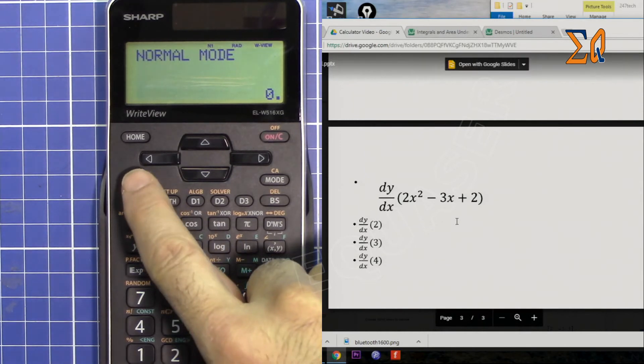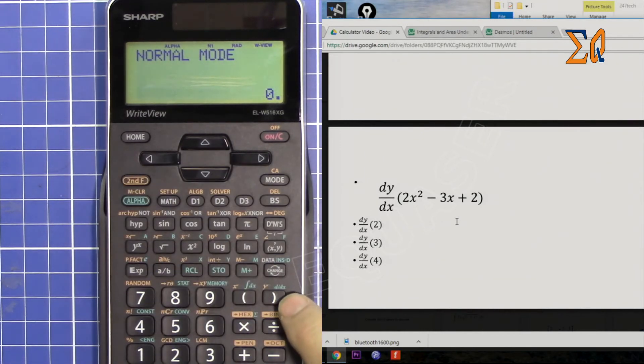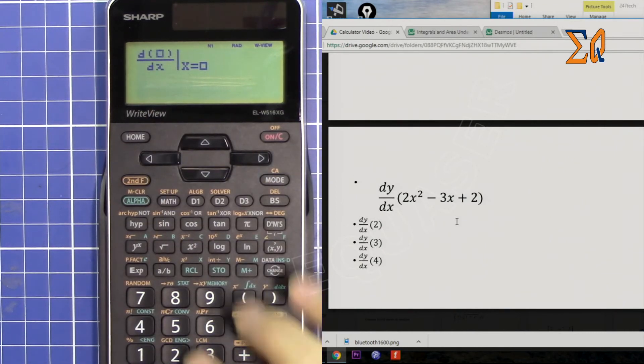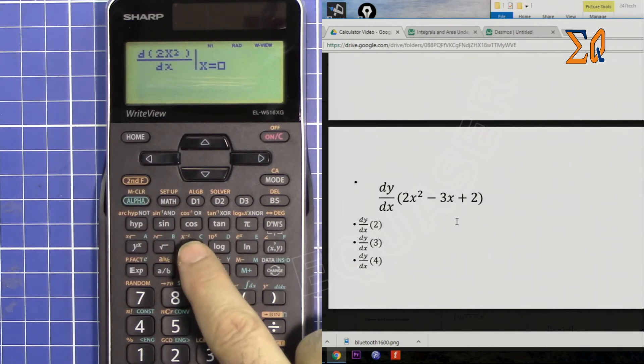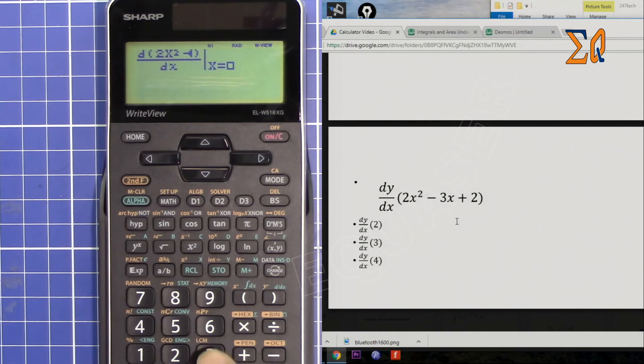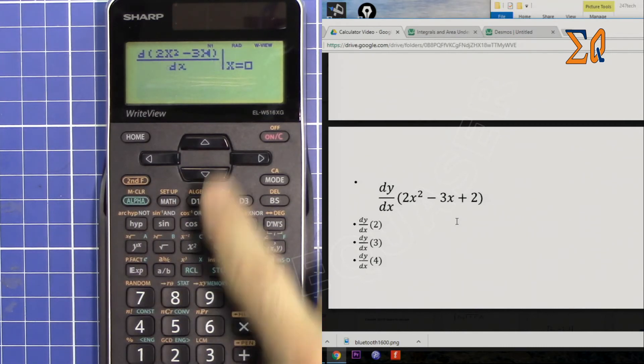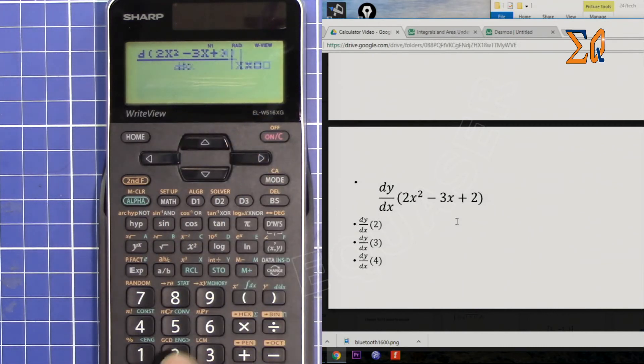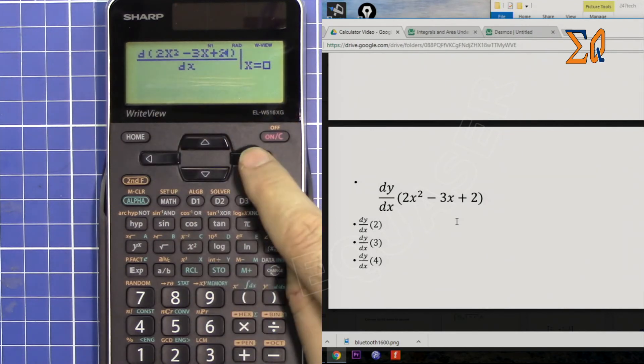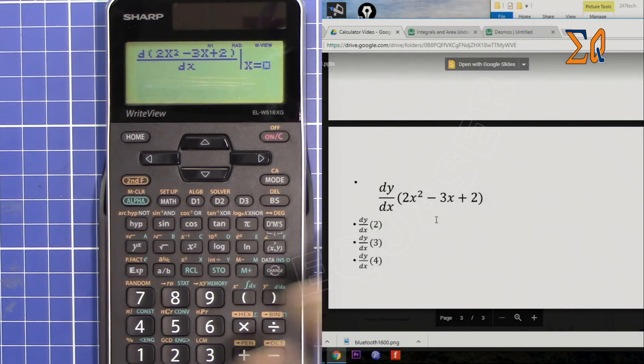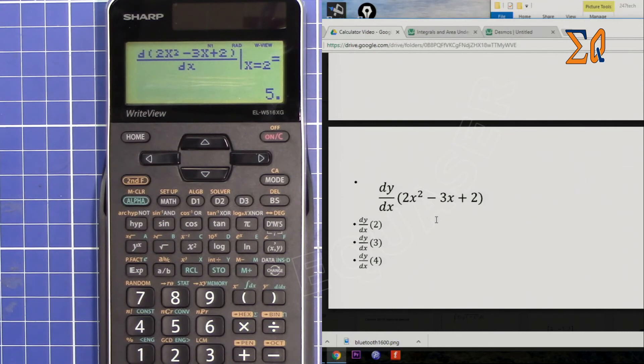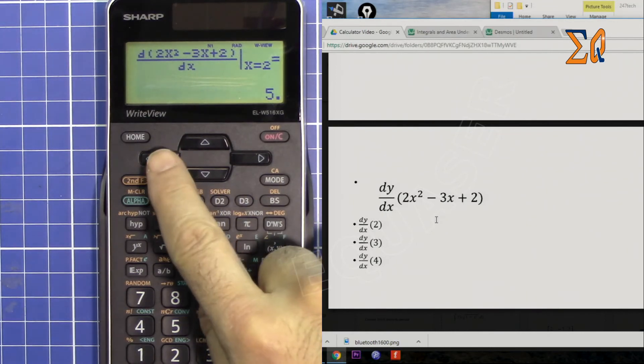Press Alpha and then this button, d/dx. Now it asks you for the function, so 2—I'm pressing Alpha X—and then squared, minus 3, and then again Alpha X. Plus 2. That's done, so just come to the right. Now we are evaluating it, so it takes a derivative and evaluates it with 2. I'm putting 2, equal sign, so that is 5.